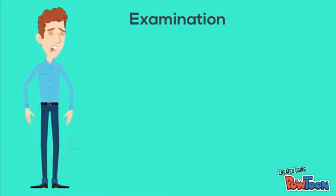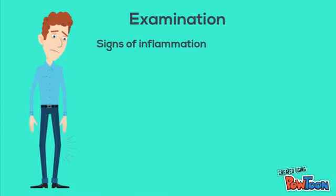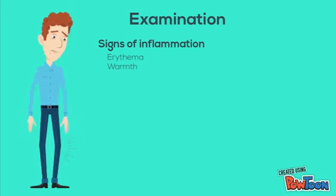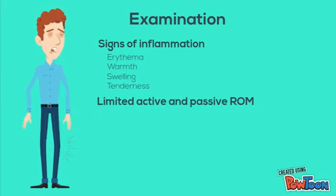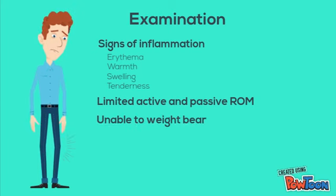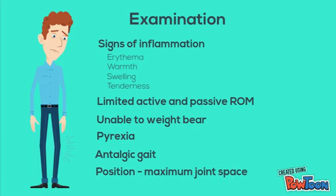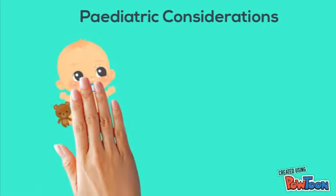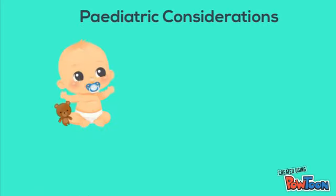On examination, the joint will have signs of inflammation such as erythema, warmth, swelling and tenderness. There will be limited active and passive range of motion and the joint will be unable to bear weight. The patient might be pyrexic, have an antalgic gait, and keep the joint in a position that maximizes joint space.